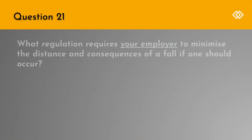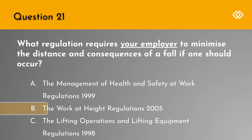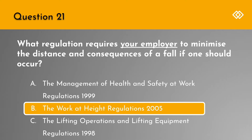Question 21. What regulation requires your employer to minimise the distance and consequences of a fall if one should occur? A. The Management of Health and Safety at Work Regulations of 1999. B. The Work at Height Regulations of 2005. Or C. The Lifting Operations and Lifting Equipment Regulations of 1998. The correct answer is B. The Work at Height Regulations of 2005.